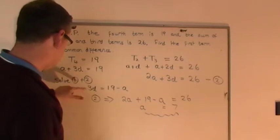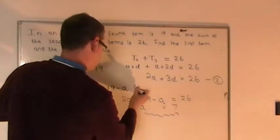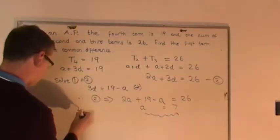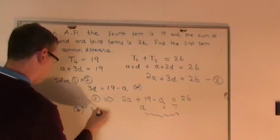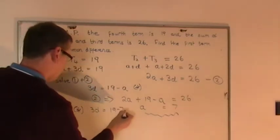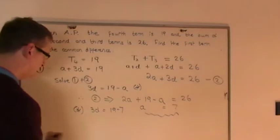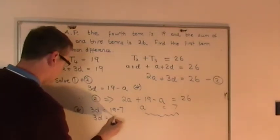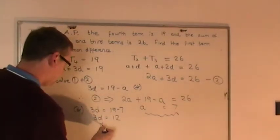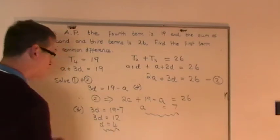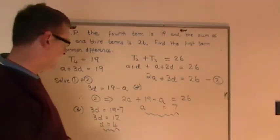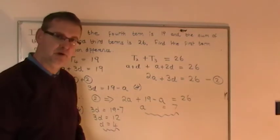To find out what D is, let's go back to this asterisk line. So from the asterisk line, 3D is 19 take away A, which is now 7. So 3D equals 12. So D must obviously be equal to 4. And there you go, those are the two answers: A is 7, and D is equal to 4.